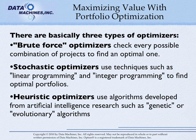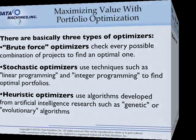Heuristic optimizers use algorithms developed from artificial intelligence research, such as genetic or evolutionary algorithms, to find optimal and near-optimal portfolios. A well-designed heuristic optimizer will work well for large portfolios and will usually discover a near-optimal solution quickly.